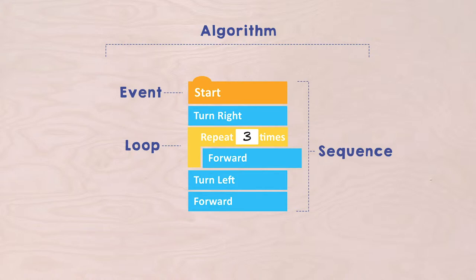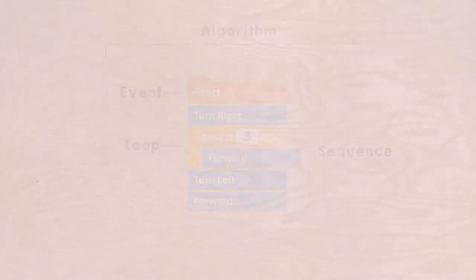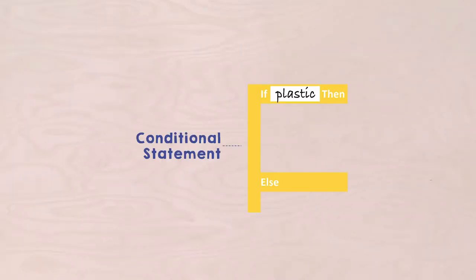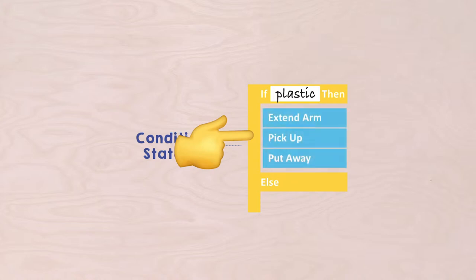Of course, we do not want to take the animals out of the sea. Such a check is called a conditional statement in programming language, an equation to determine whether something should or should not be done. Take a look at this yellow block. First a check: if this is true, in our case I fill out plastic. If it is plastic, then do this. Here I fill out the three cleaning actions: extend arm, pick up, and put away. Or else, for instance, if it is not plastic but a fish, then go on.